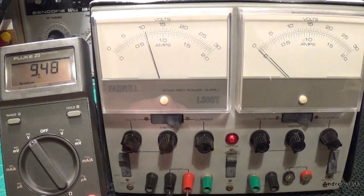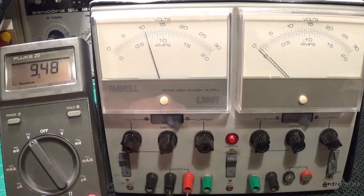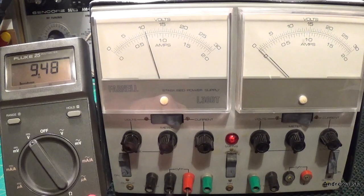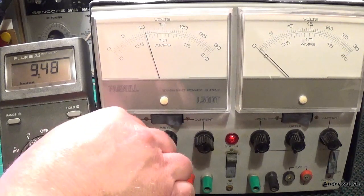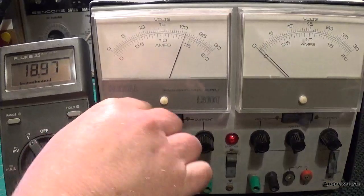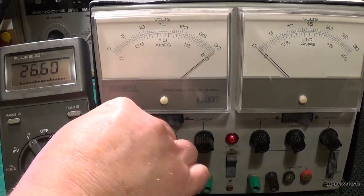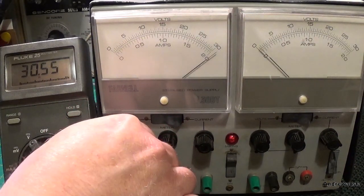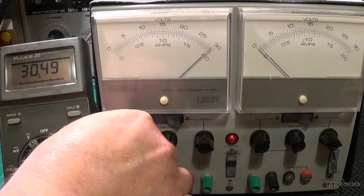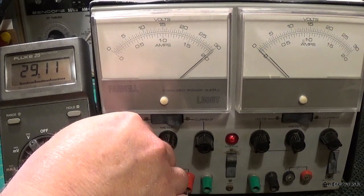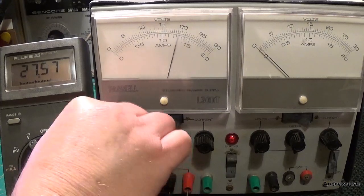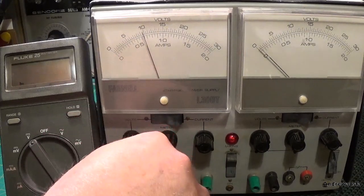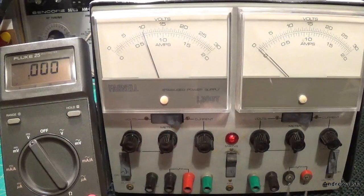Yeah, we seem to have some sort of power there. Let's turn the outputs on. We've got about 9 volts there, so the meter is a little bit out. Let's see what the maximum it does is. Oh yeah, she goes all the way to 30. So the meter is a little bit out but not bad.